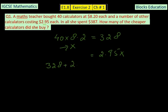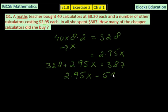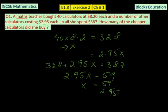The total she spent is 387, so it means that 328 plus 2.95X equals 387. Let's take 328 on the other side, so it will be 2.95X equals 387 minus 328, which would be 59. And let's divide 59 by 2.95.